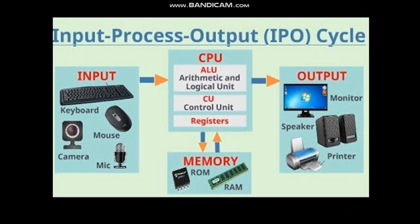Computer data is information processed or stored by a computer. This information may be in the form of text, documents, images, audio clips, software programs or other types of data. Computer data may be processed by a computer CPU and is stored in files and folders on the computer's hard disk.